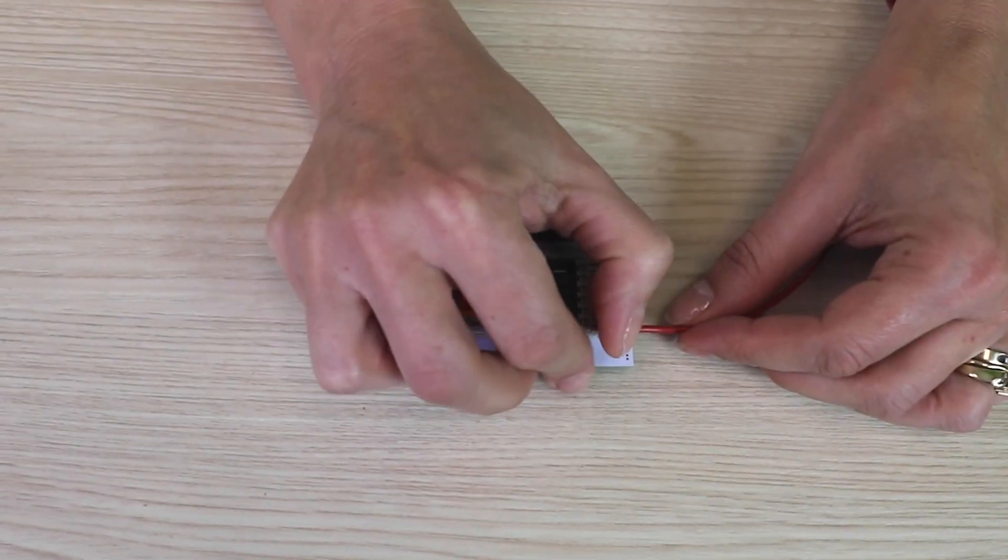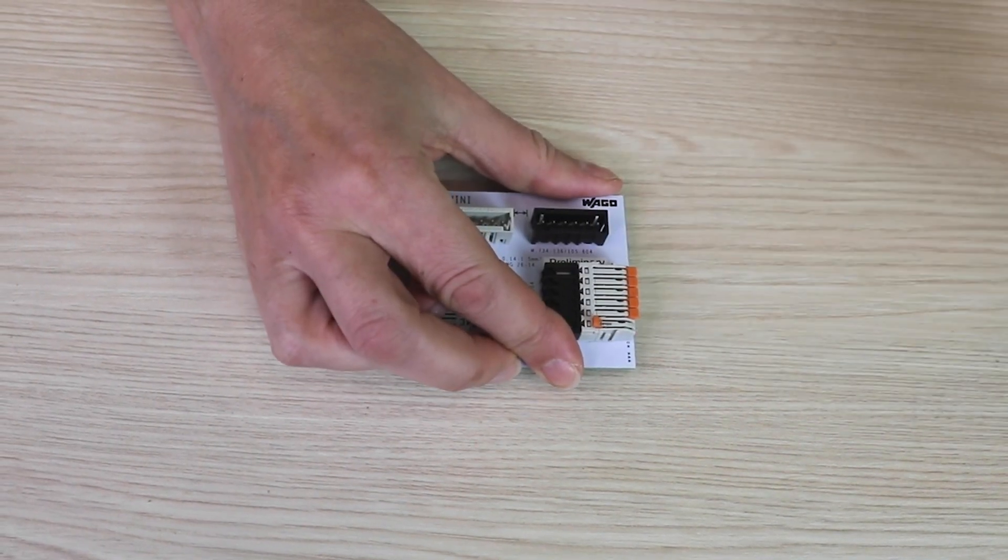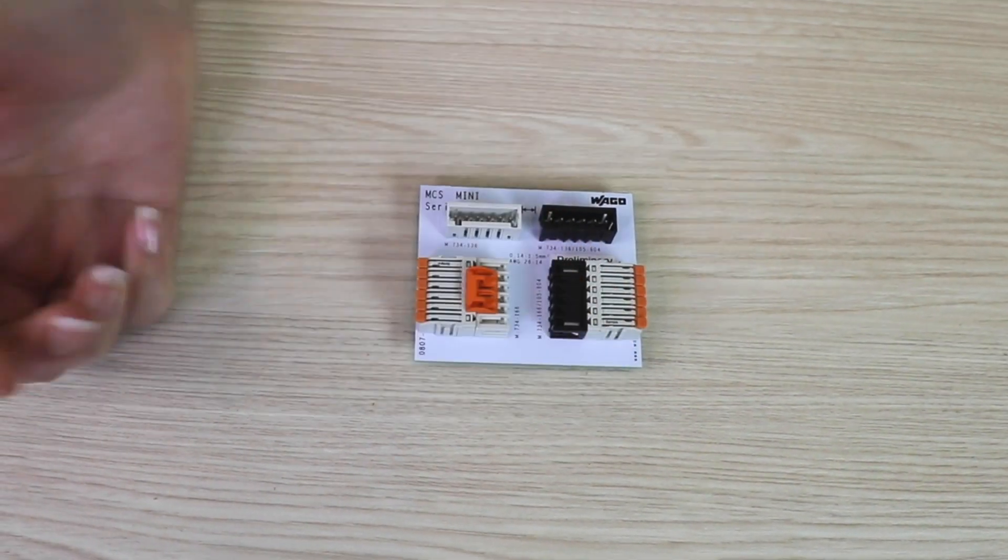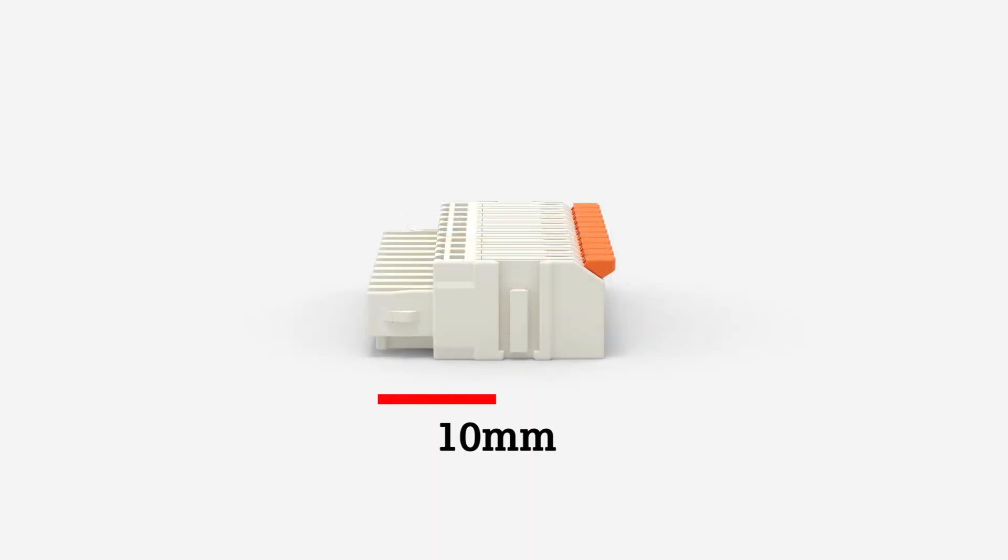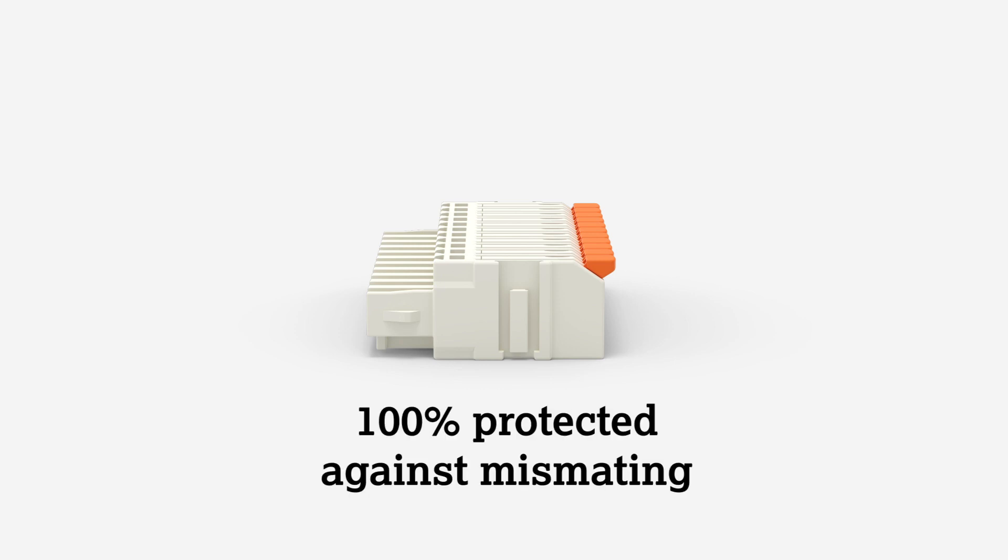Removal of the wires is just as easy. No tools needed, even when the connector is plugged in. At 3.5 mm pin spacing and just 10 mm in height, this compact design is 100% protected against mist mating.